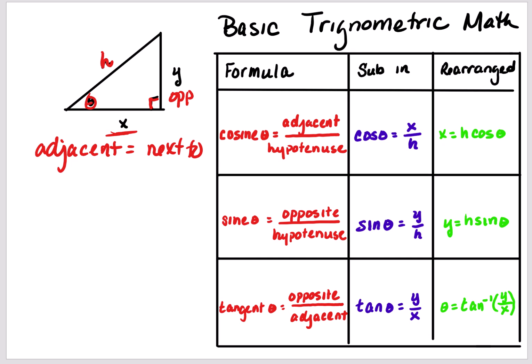Tangent theta is defined as opposite over adjacent. So if I rewrite this equation, tangent theta is equal to y — which is opposite the theta — over x, which is adjacent. In general, you will use tangent theta to find the angle of the resultant vector, so tangent theta equals y over x.